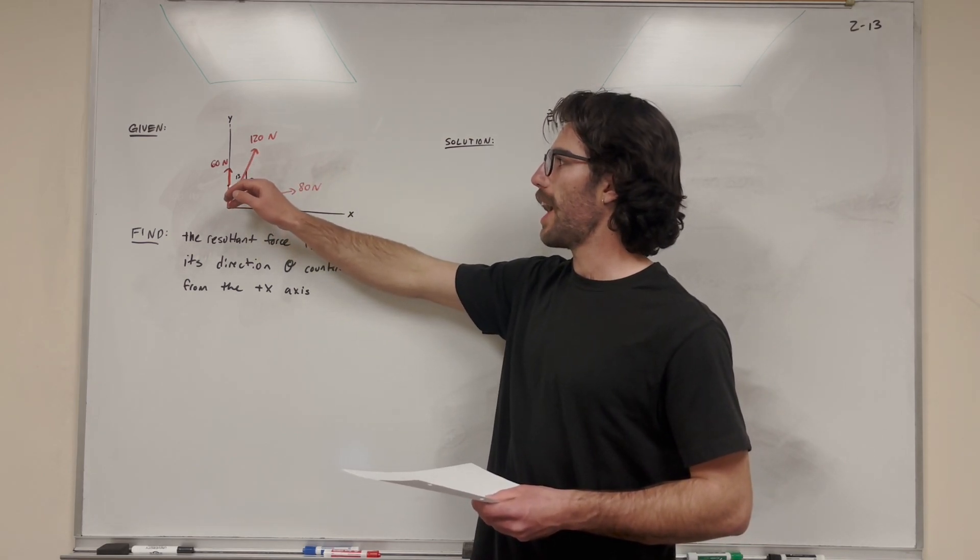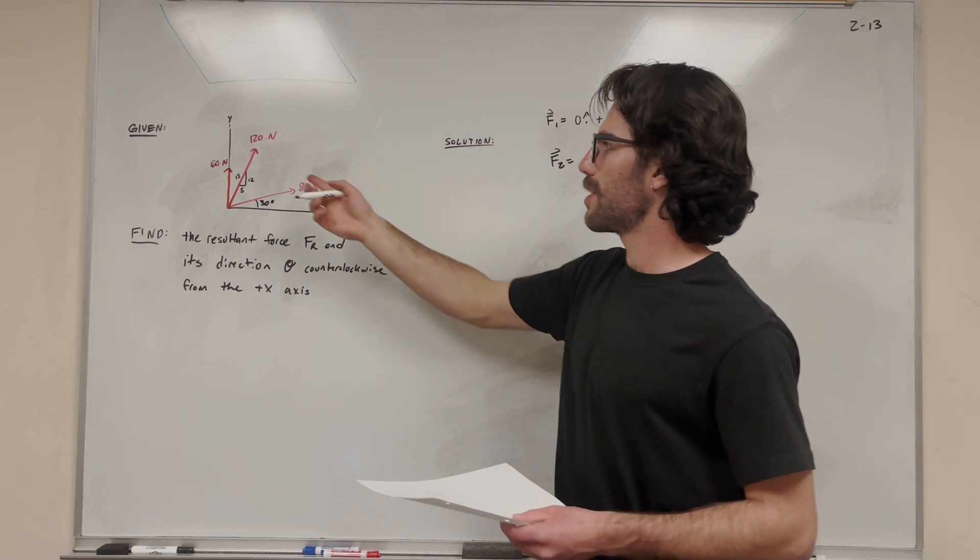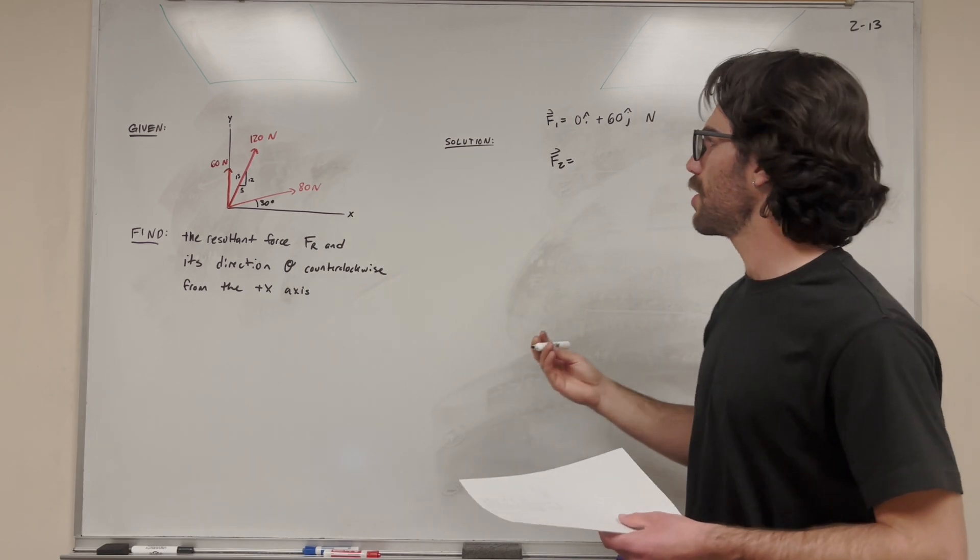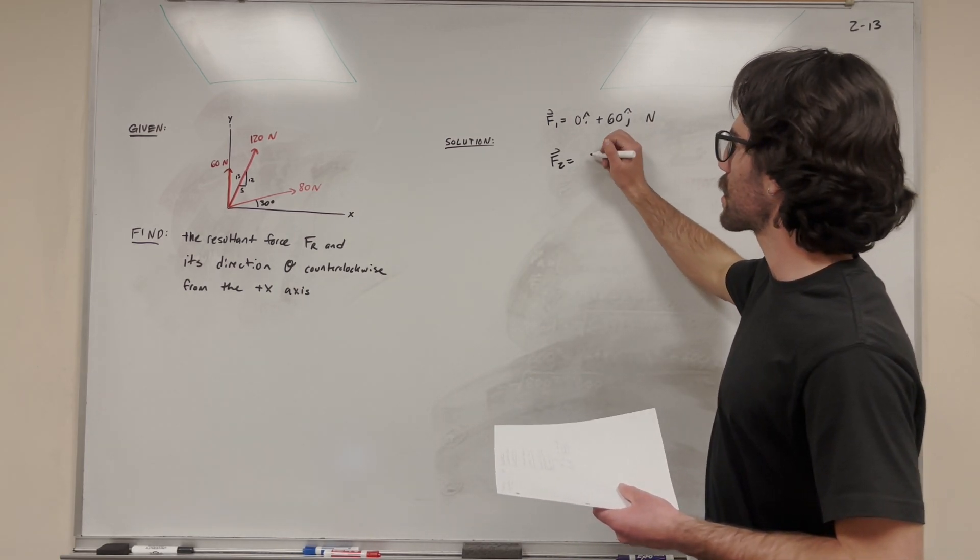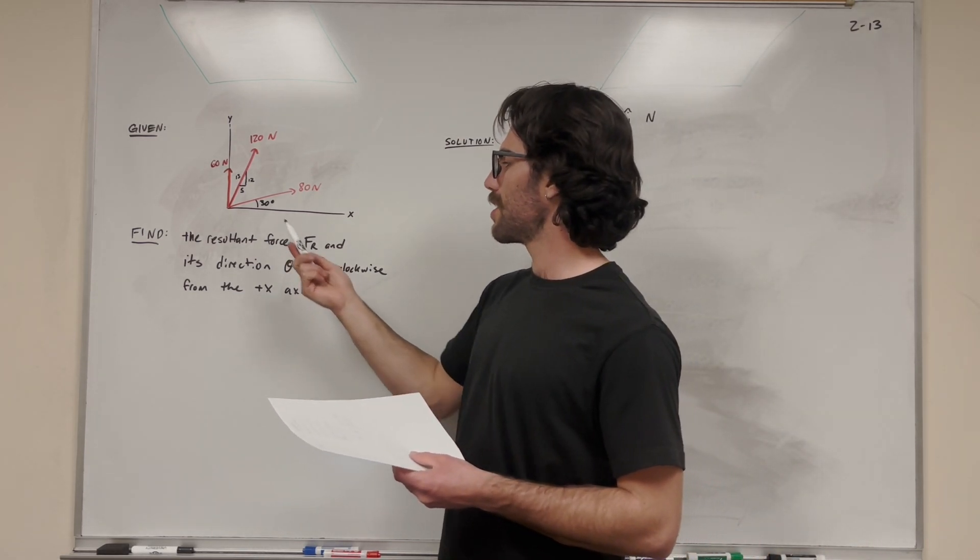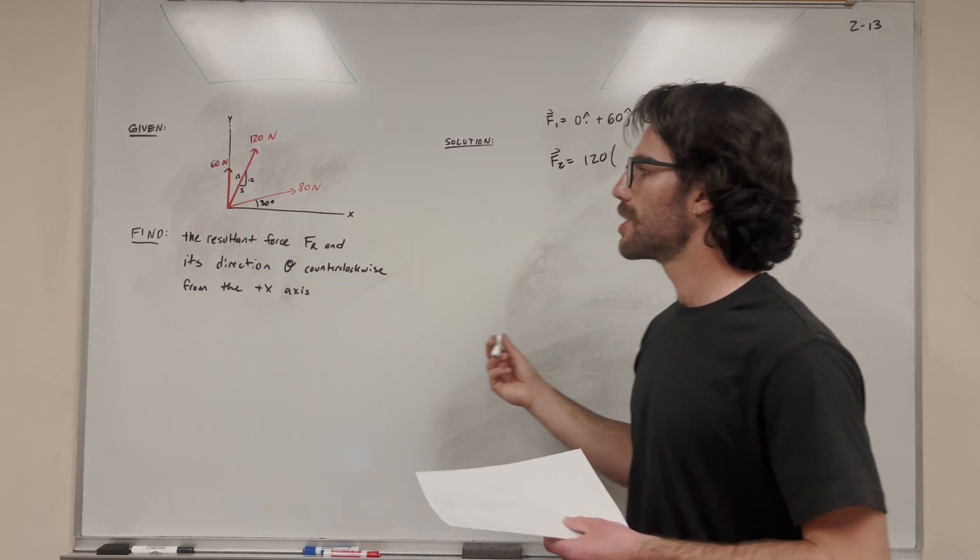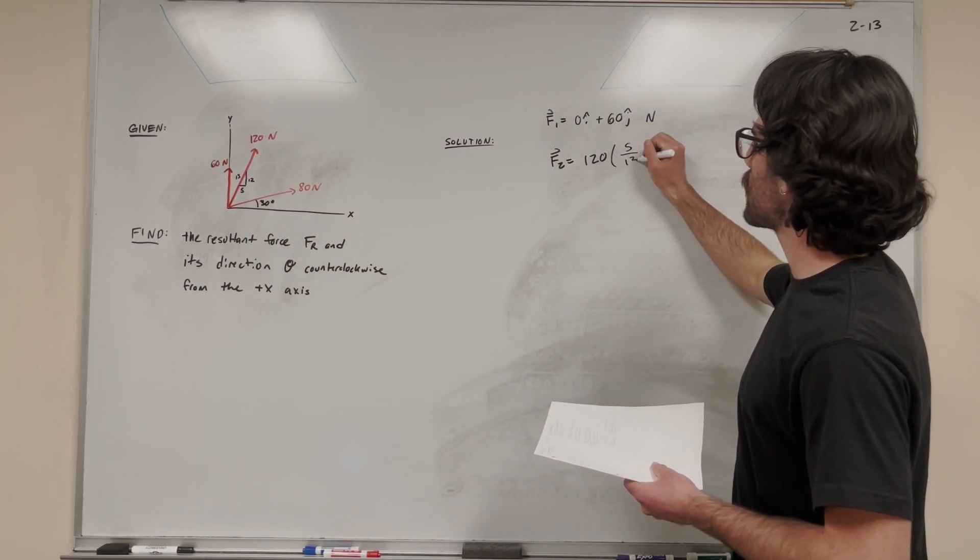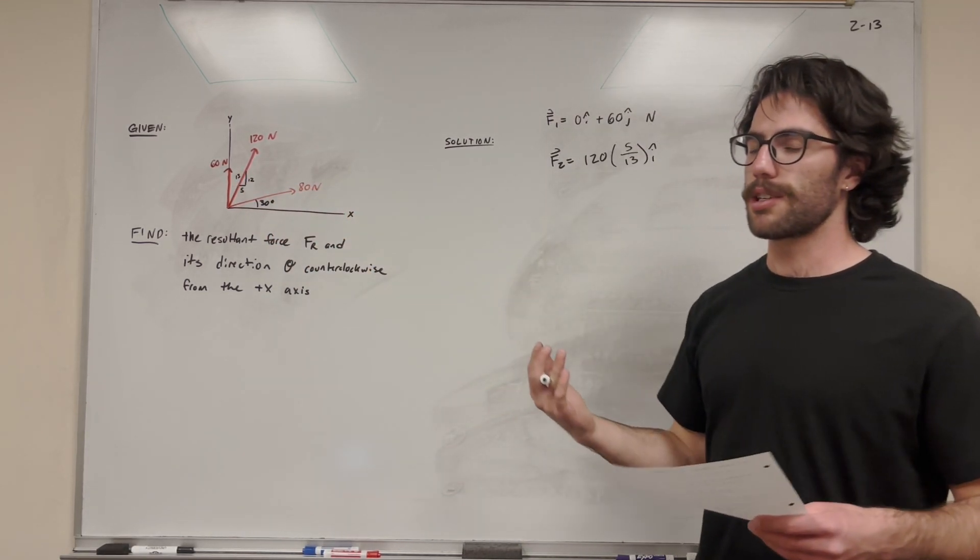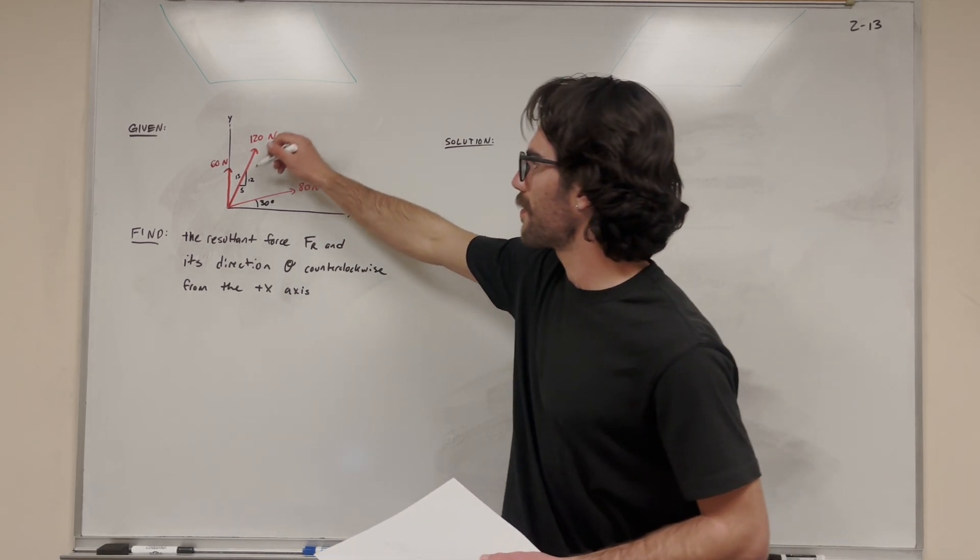120 newtons is pointing at this 5, 12, 13 triangle. So we're going to say force 2 is equal to, now when we want to convert force to a Cartesian vector, but it's at a triangle, we can do the ratios from the triangle that it acts at. So if you want to find the x component, let's start with the magnitude. So we have 120. Then we're going to multiply it by its ratio in the x direction. So its x component of this triangle is 5, and its hypotenuse is 13. So the ratio we're looking at is 5 over 13 in the i direction. Now the reason we're doing that is because the 5, 13 triangle is just a similar triangle, and if we just multiply it by the magnitude, we're going to get the same exact thing for the x component here.